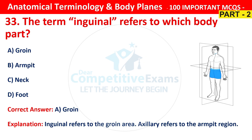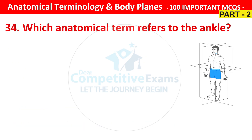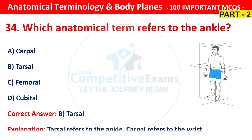Question number 34. Which anatomical term refers to the ankle? Your options are carpal, tarsal, femoral or cubital. The right answer is B, that is tarsal. Tarsal refers to the ankle and carpal refers to the wrist.